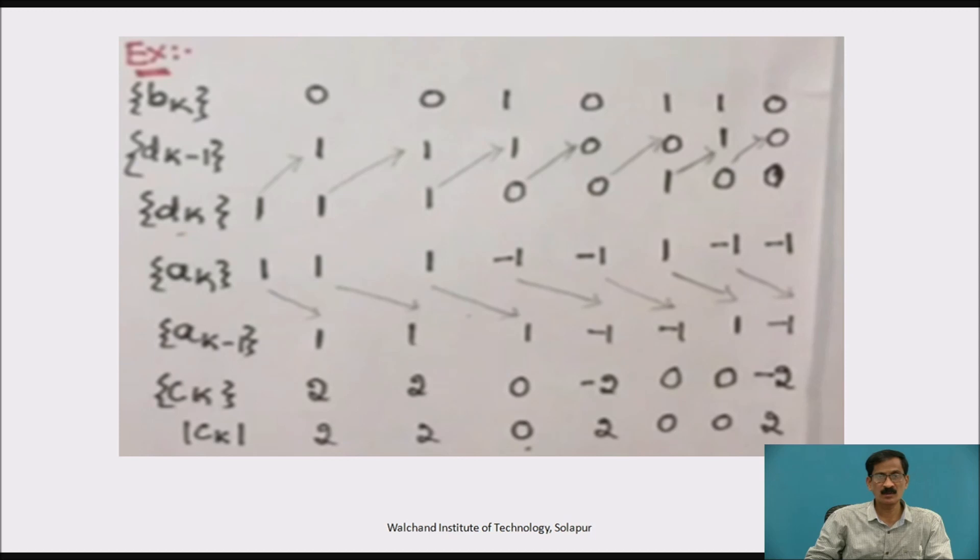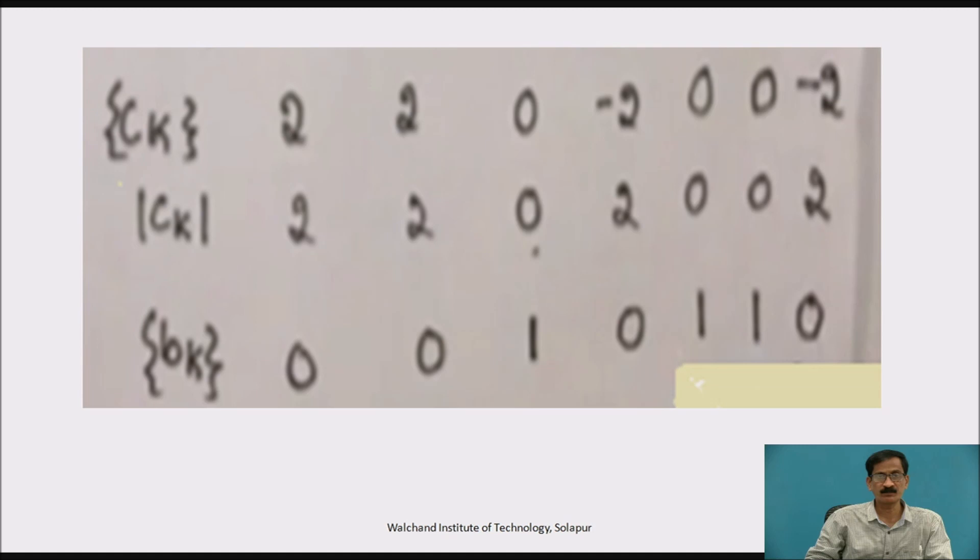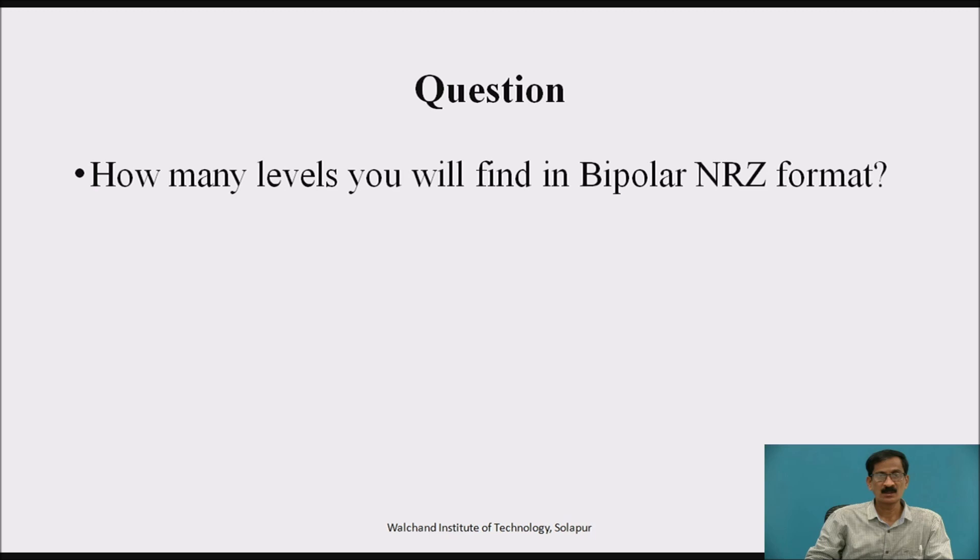So, 1 plus 1 is 2, 1 plus 1 is 2, minus 1 plus 1 is 0, minus 1 minus 1 is minus 2, 1 minus 1 is 0, minus 1 plus 1 is 0, minus 1 minus 1 is minus 2. Now, this c k to get the magnitude we got the last row 2 2 0 2 2 0 0 2. Now, from c k using a decision device we got the original sequence which has been sent at the transmitter section as b k: 0 0 1 0 1 1 0. Using a decision device.